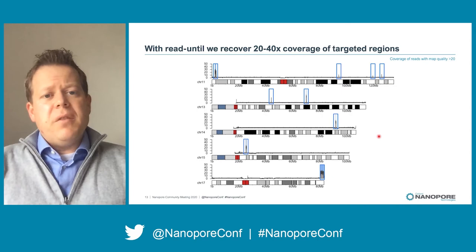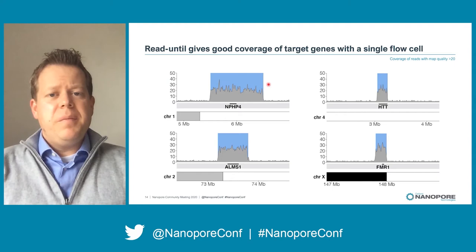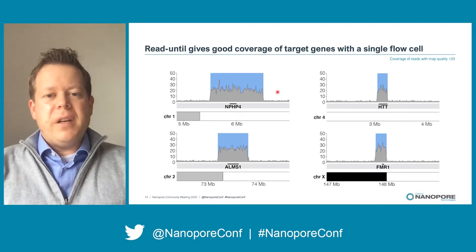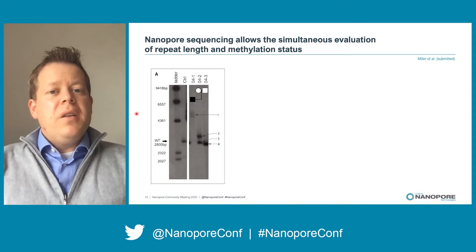Here I've zoomed in on four specific genes with the targeted region in blue, and again you can see coverage is increased in the targeted region. The data is generated using a single flow cell which, without ReadIntel, in my hands would give about 3 to 5x coverage of the human genome — so this works out to about a 500% increase in coverage of these target regions. Next we wanted to use ReadIntel in regions known to have repeat expansions and then changes in methylation because of those expansions.